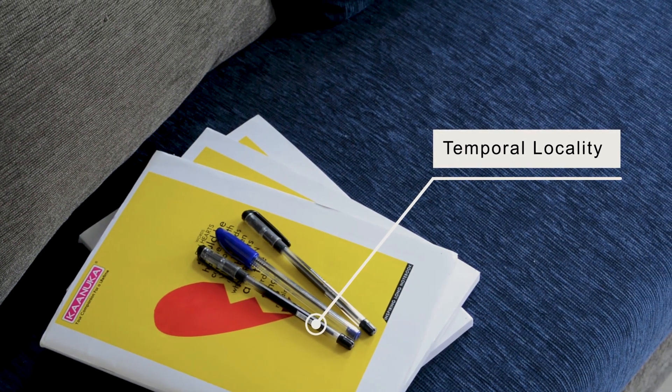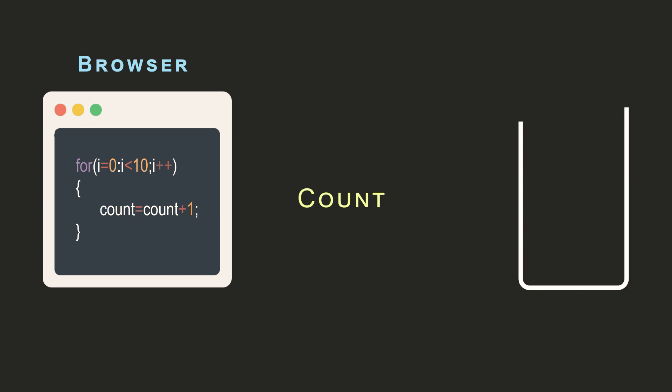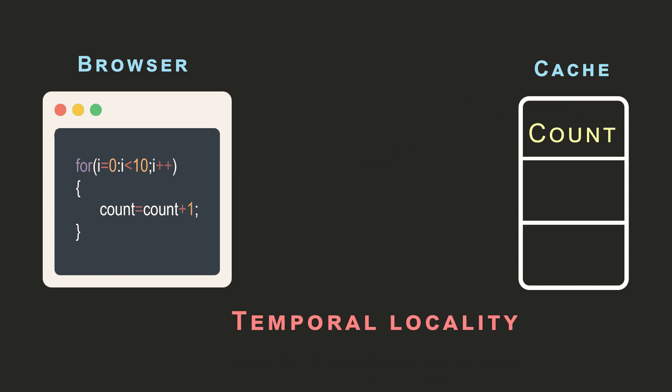Where frequently used items are picked up, it is similarly beneficial to fill the cache with frequently used data, so that the CPU's average access time will be less and performance will be higher. For example, consider a for-loop to count numbers — the count instruction is called again and again. If you place the instruction related to count in the cache, you are using the logic of temporal locality.